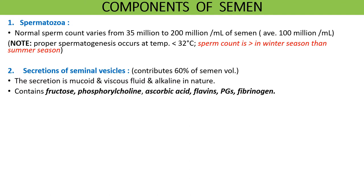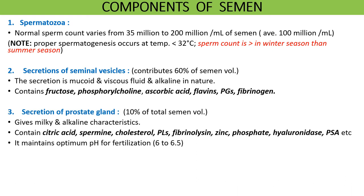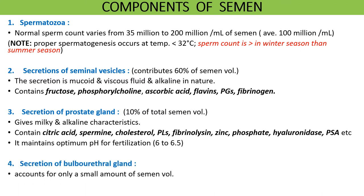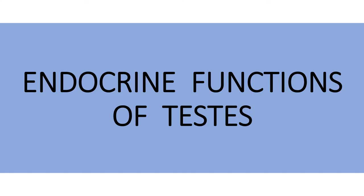Semen also contains secretions of seminal vesicles, which contribute about 60 percent of the semen volume. This secretion is rich in fructose, phosphorylcholine, vitamin C, prostaglandins, and fibrinogen. It also contains secretions of the prostate gland, which give semen its milky color and are rich in citric acid, cholesterol, zinc, phosphate, and fibrinolysin, as well as a small secretion from the bulbourethral glands.